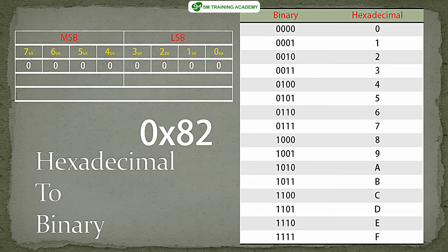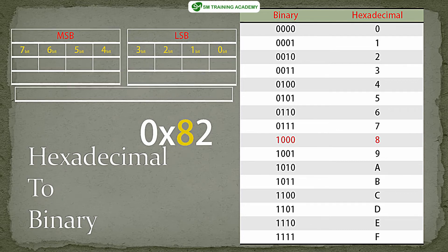Let us convert 0x82 into equivalent binary bits. This hexadecimal number is a byte of data, because 8 bits is one byte. The first step for converting a hexadecimal number into binary bits is to split the number into two parts. The number is 82, so we take the MSB — the most significant bits — separately, and the LSB — the least significant bits — separately. In 0x82, the 8 is the MSB of the byte.